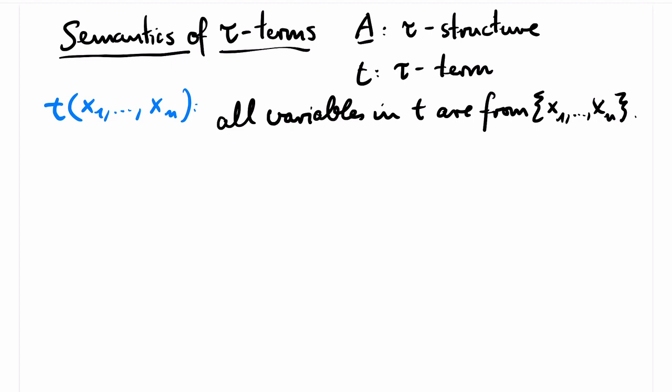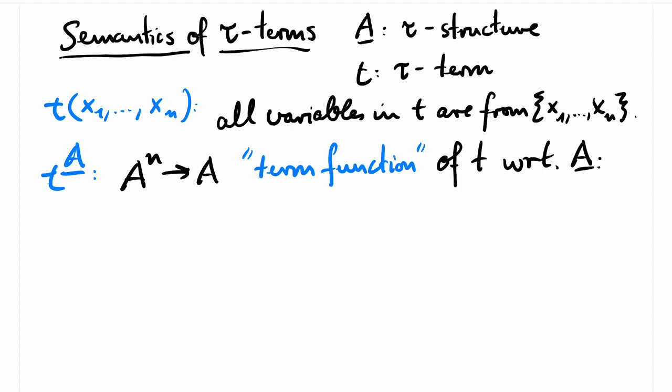Now, if I have T and this fixed string of variables x1 up to xn that may appear in T, then T describes over A an operation of arity n, which I will denote by T superscript A, and which is called the term function of T with respect to A, which informally is the operation we obtain by evaluating T over A. Formally, the definition of this operation is by induction.